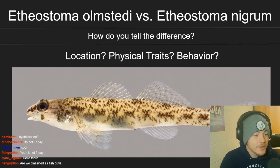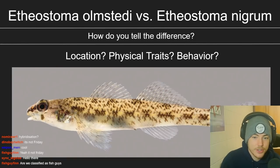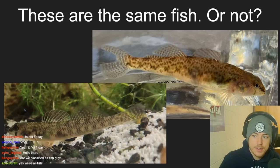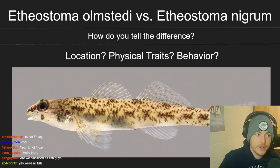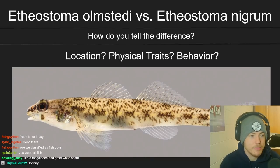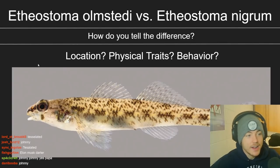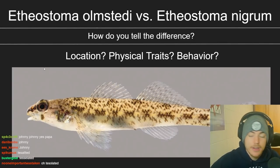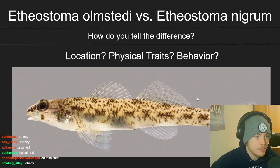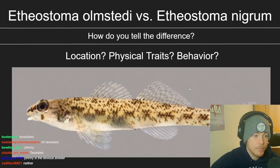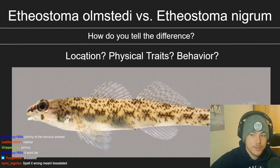So what are we looking at here? Is this a tessellated darter or a johnny darter? Chat guessed — for reference the top right is a tessellated, the bottom left is a johnny darter. According to chat, about 80 percent said this is a johnny darter, a couple said tessellated, and a couple said it's a hybrid between the two. How do you actually tell the difference? Do you use the location you get them from, physical traits, behavior?